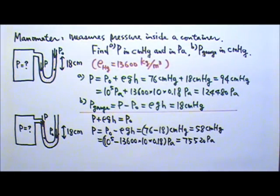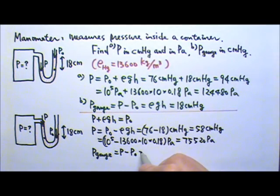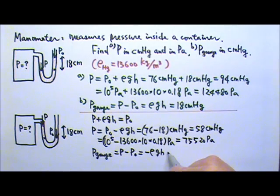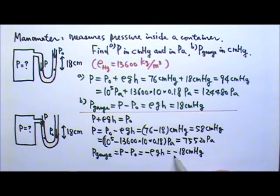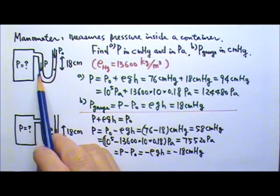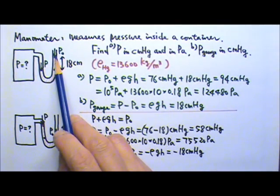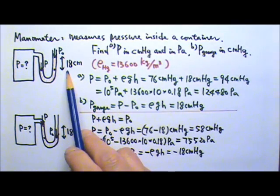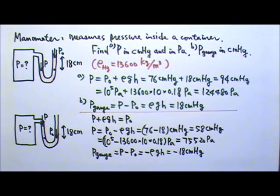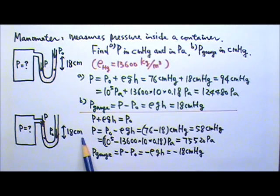That's the absolute pressure. The gauge pressure is the absolute pressure minus the atmospheric pressure. If I subtract Po from P, I get negative ρgh, which is negative 18 centimeter mercury. This negative tells us that the pressure in here is below the atmospheric pressure by 18 centimeter mercury. When the mercury column is taller on the right side, the pressure inside is higher than atmospheric by 18 centimeter mercury. When it's taller on the left side, the pressure inside is less than atmospheric by 18 centimeter mercury.